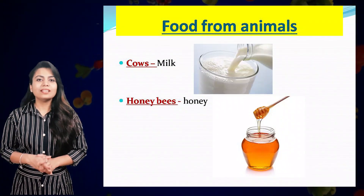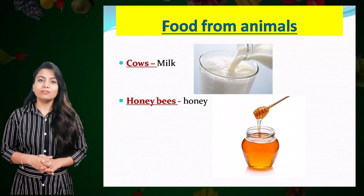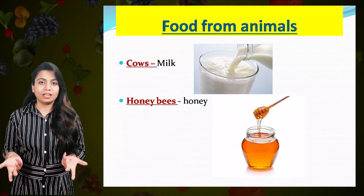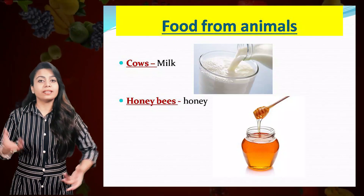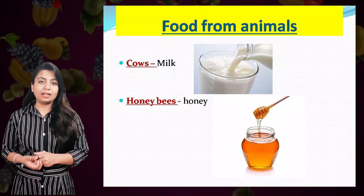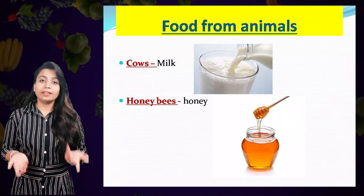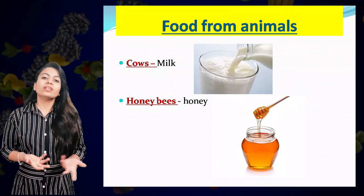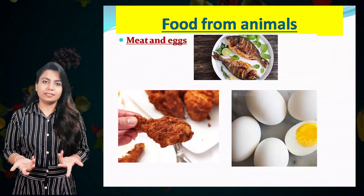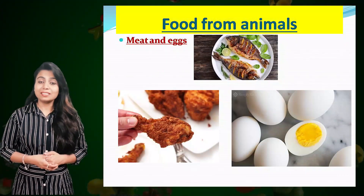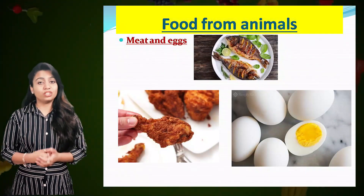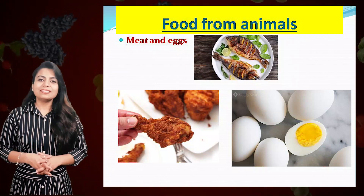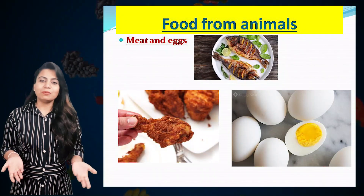The second animal food is honey. We get honey from honey bees. Honey bees take nectar from flowers and then they make honey, and we get honey from them. Next is meat and eggs. We get meat and eggs from sheep, hen, and fish. So these are the animal foods.